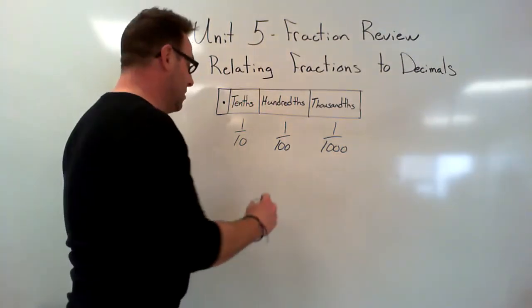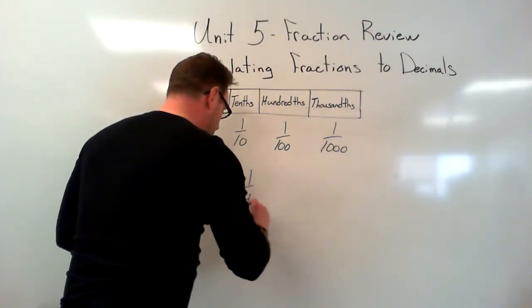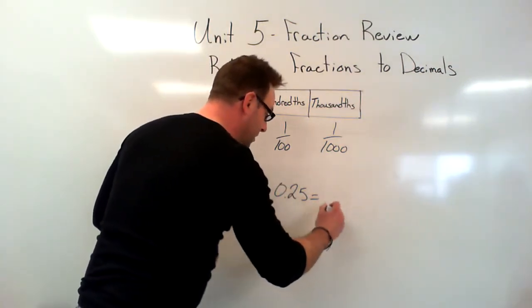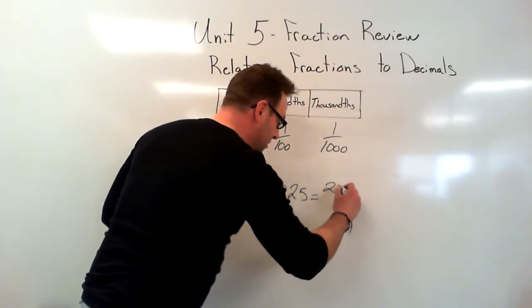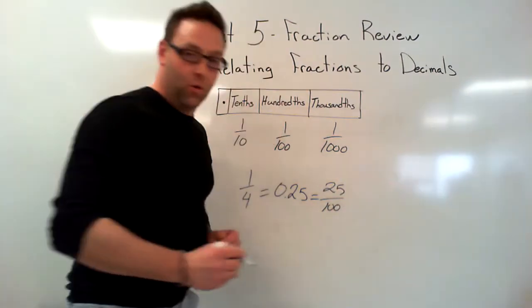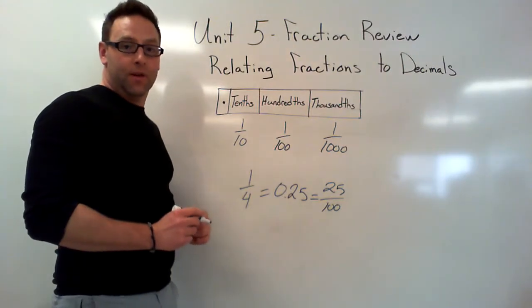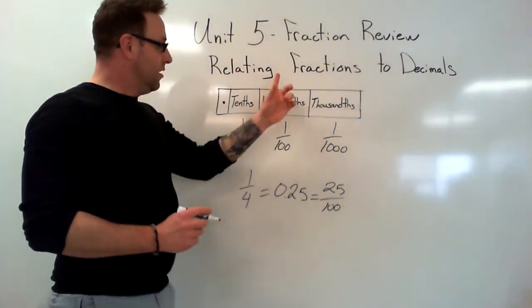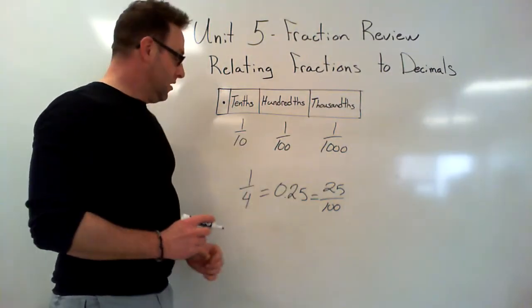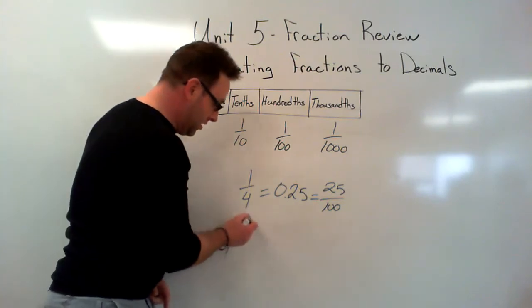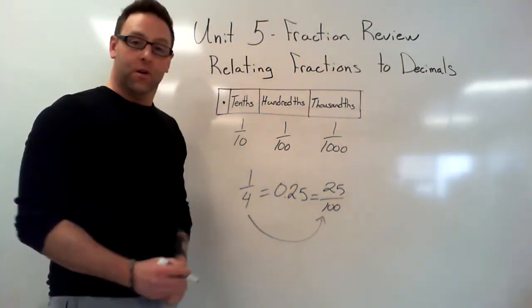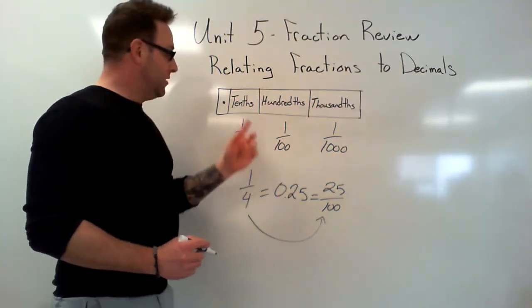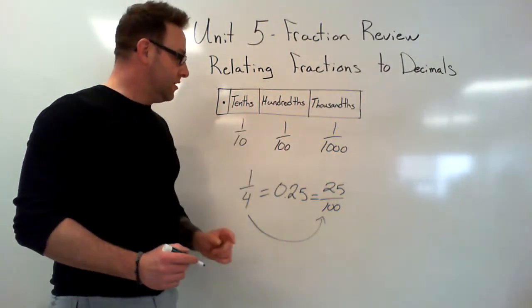To make that a little less confusing, we're going to go 1 over 4 equals 0.25, which equals 25 over 100. So we've got the place value: tenths, hundreds, thousands. We've got equivalent fractions: 1 over 4, 25 over 100. And any number that's over top of 10, 100, or 1000 is going to give us a decimal.